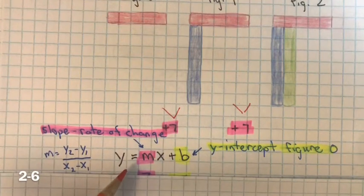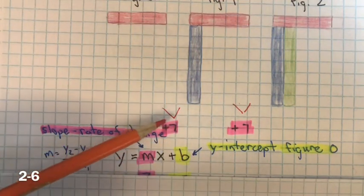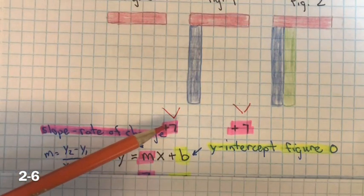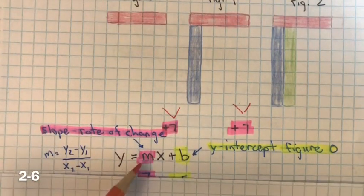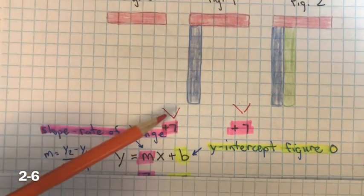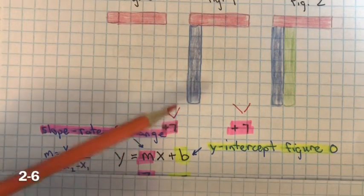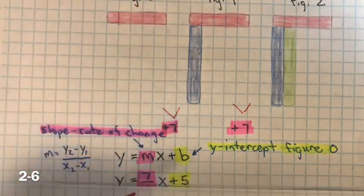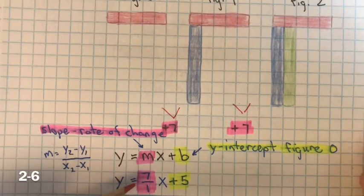We would use slope-intercept form, y equals mx plus b, and we can use this formula because it's growing at a constant rate. If it's growing at a constant rate, you know it's a linear equation. The rate of change — the slope — is the difference of the y's over the difference of the x's. It's increasing by 7 tiles for every figure number, so the rate of change is 7 over 1.